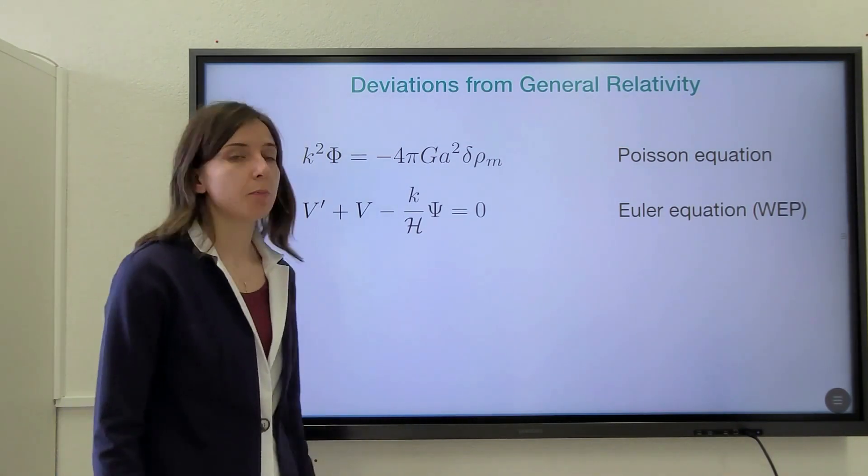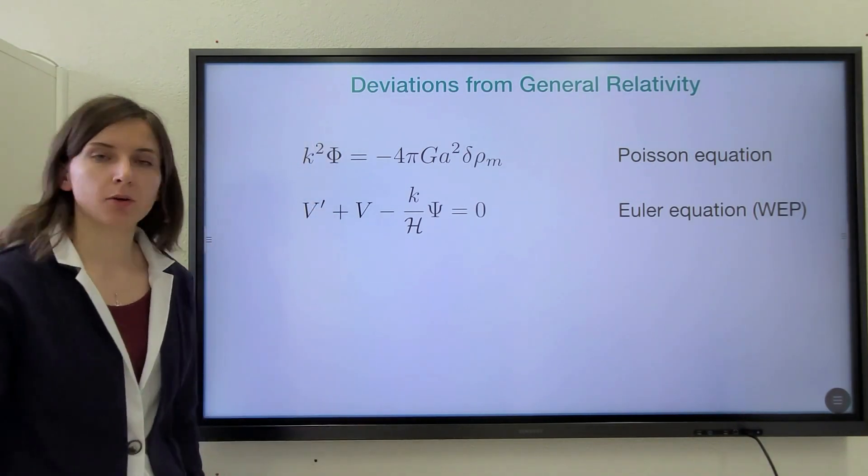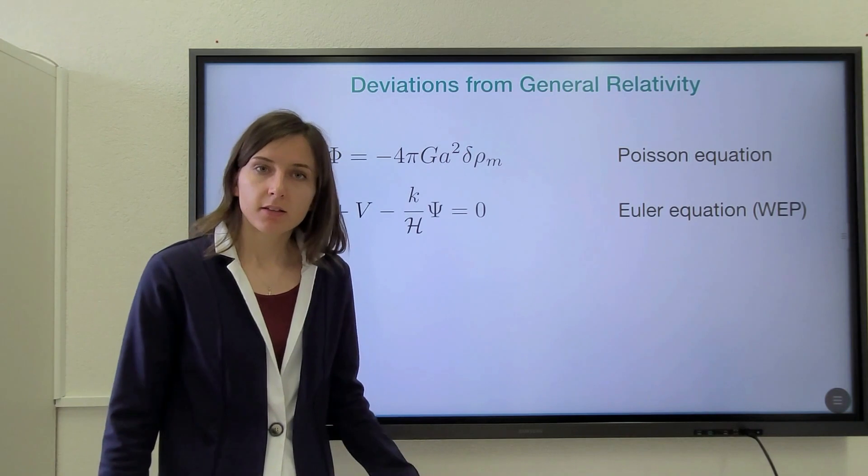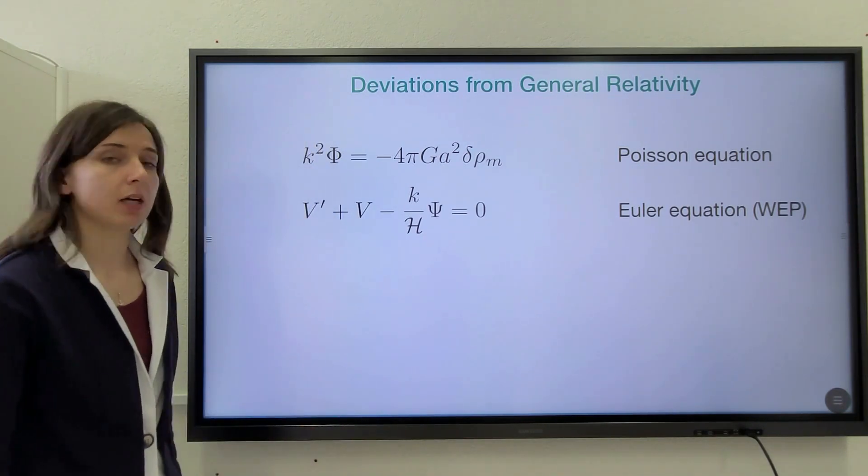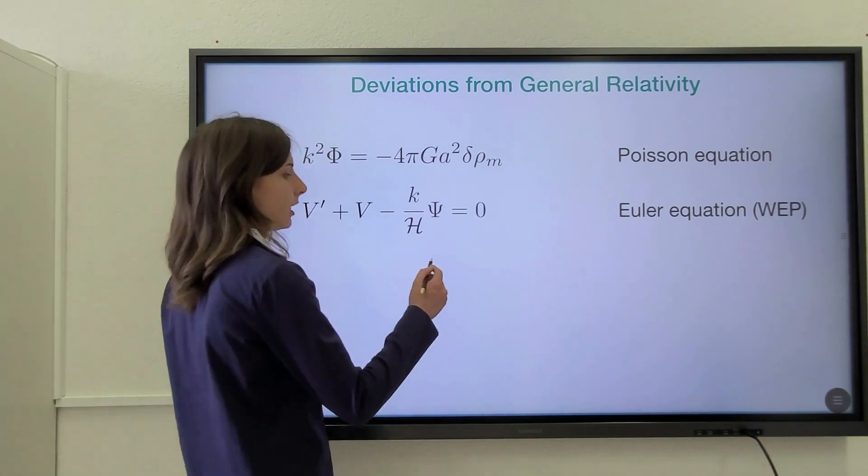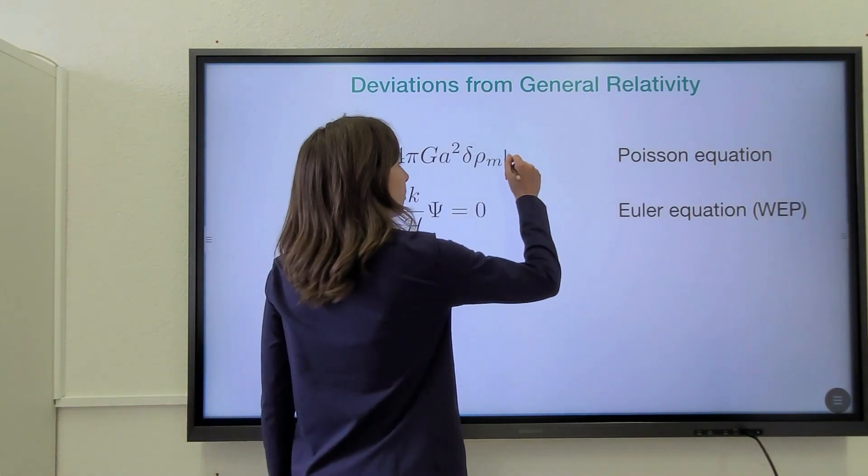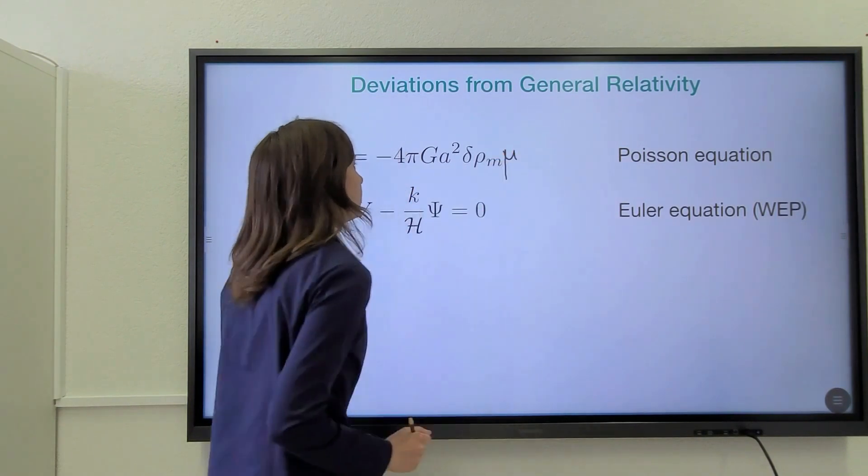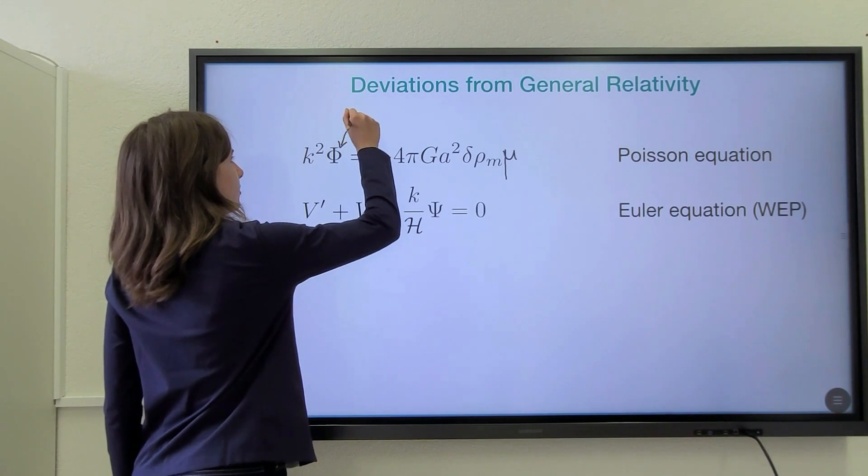The standard way to parameterize gravity modifications is to assume that the Euler equation is tested and thus unmodified, and then the modifications enter the Poisson equation, which is modified in a phenomenological way by including a parameter mu on the right-hand side of this equation, and by changing the field that is involved in this equation.